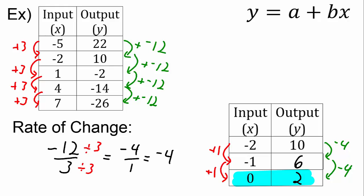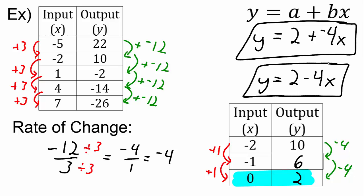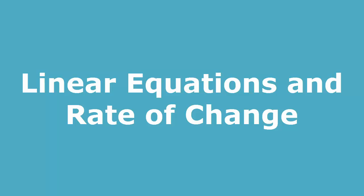And we're ready to write our equation: y equals 2 plus negative 4x. You may prefer to write that as y equals 2 minus 4x — either way is fine. In this section, we calculated the rate of change using an input-output table, then used the rate of change and the y-intercept to write equations in intercept form.